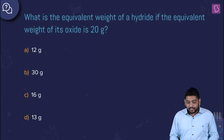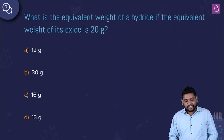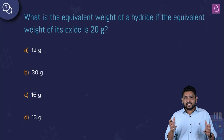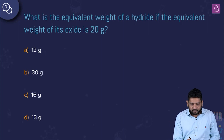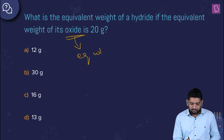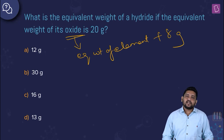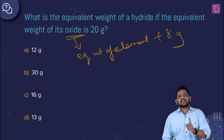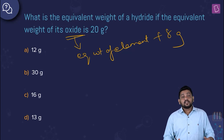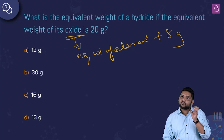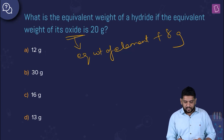This question asks: what is the equivalent weight of a hydride if the equivalent weight of its oxide is 20 grams? When looking at an oxide, the equivalent weight of the oxide equals the equivalent weight of the element plus 8. One equivalent of a substance combines with one equivalent of oxygen to give one equivalent of oxide — that's the whole idea of equivalence.